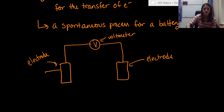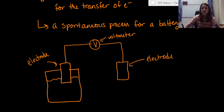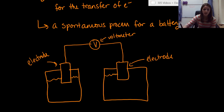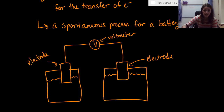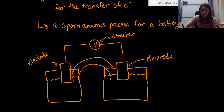I'm going to put each electrode into a beaker filled with some kind of solution. Then I connect the two beakers by bringing a tube all the way into each solution. This is called a salt bridge.